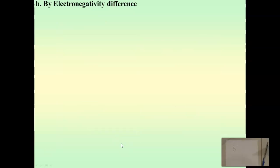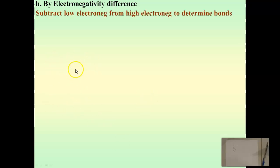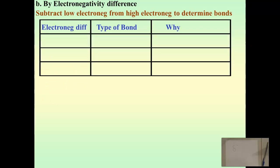One method we're going to learn is how to tell what type of bond it is based on electronegativity difference. You take two atoms, write down the electronegativity of both, then subtract the smaller from the larger. If you end up with zero, the only way that happens is if the two atoms have the exact same electronegativity — meaning nobody gets the electron more often — which means we have a nonpolar covalent bond, because both atoms are pulling the electrons equally.